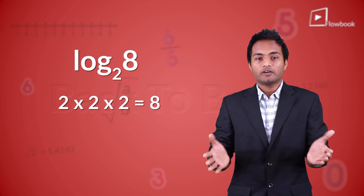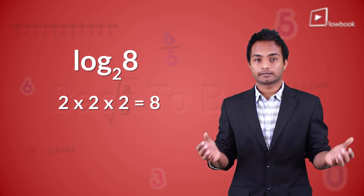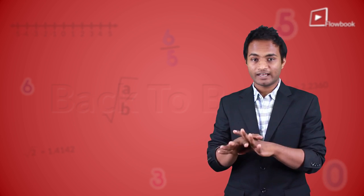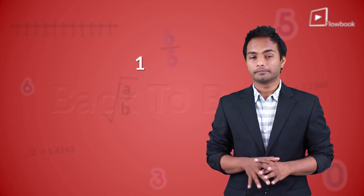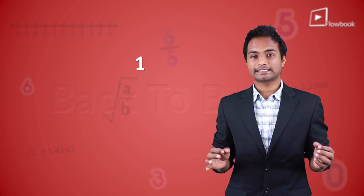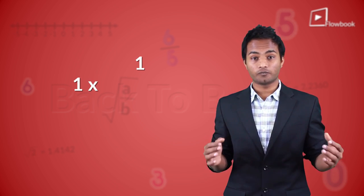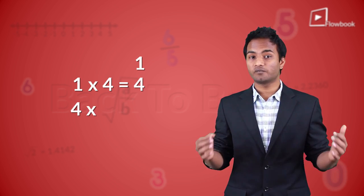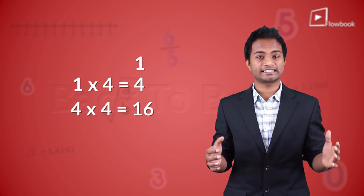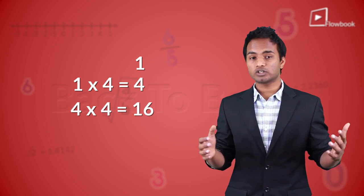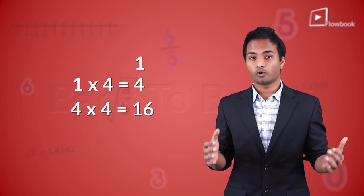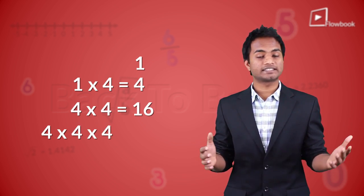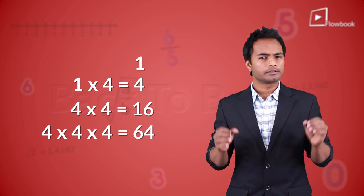Now think of it like this — we have some steps here. The first step is 1, the second step is 1 into 4 which is 4, the third step is 4 into 4 which is 16, the fourth step is 4 into 4 into 4 which is 64, and so on.